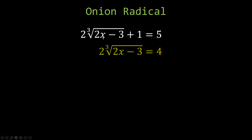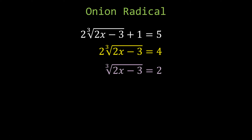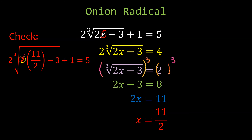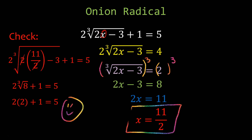Start by subtracting 1, dividing by 2, then raise both sides to the third power to undo the third root. You'll have 2x minus 3 equals 8, then add 3 and divide by 2: x is 11 over 2. Check your solution — plug 11/2 in: 2 cancels with 2, 11 minus 3 is 8, cube root of 8 is 2, so 2 times 2 plus 1 is 5. That's good — that's an onion.